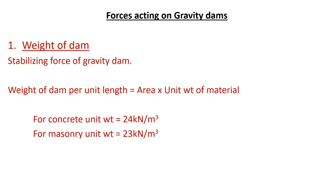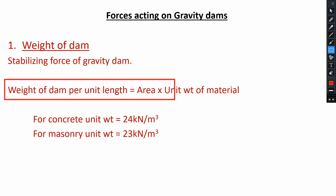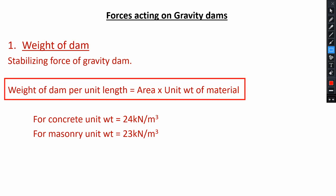The very first force is the weight of the dam. As far as a Gravity Dam is concerned, the weight of the dam is the stabilizing force. The weight of the dam per unit length can be calculated using the equation: area multiplied by unit weight of material. For concrete, the unit weight can be taken as 24 kN/m³, and for masonry, it is 23 kN/m³.